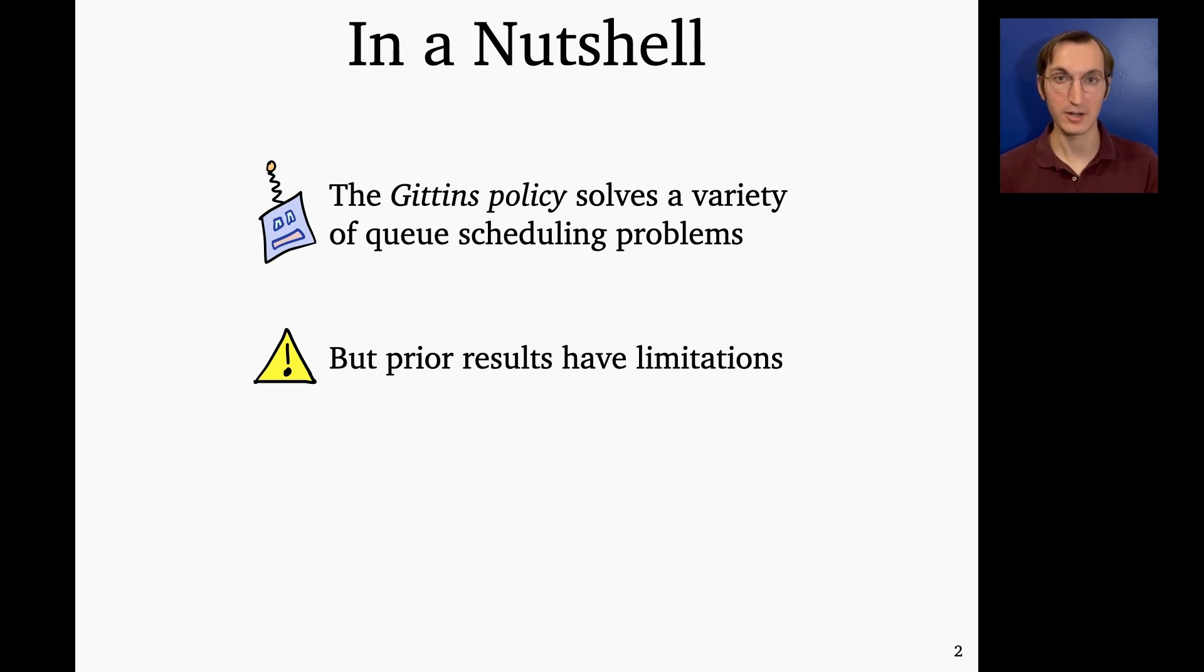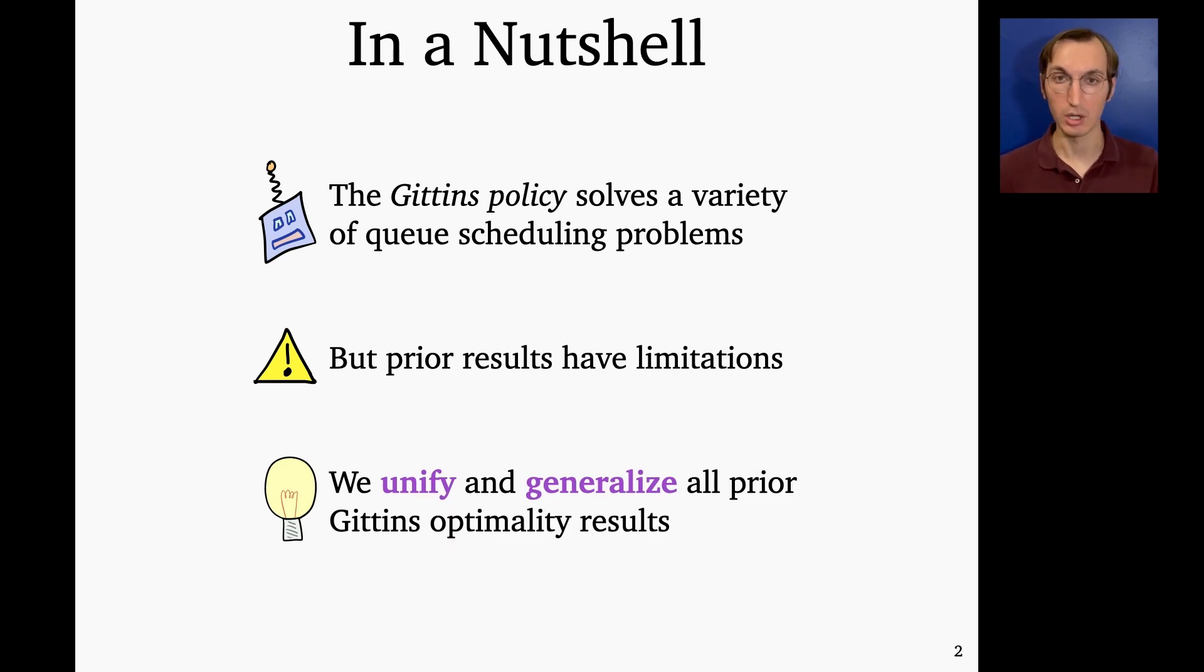So for example, there are some areas that remain unexplored, and there are other areas that have been explored but proofs only go through under certain limiting assumptions. And so what our work is about, it's about unifying and generalizing all of these prior optimality results. We state one theorem which encompasses all of the previously stated Gittins optimality results, and we give a new proof that doesn't have these limitations that previous proofs did.